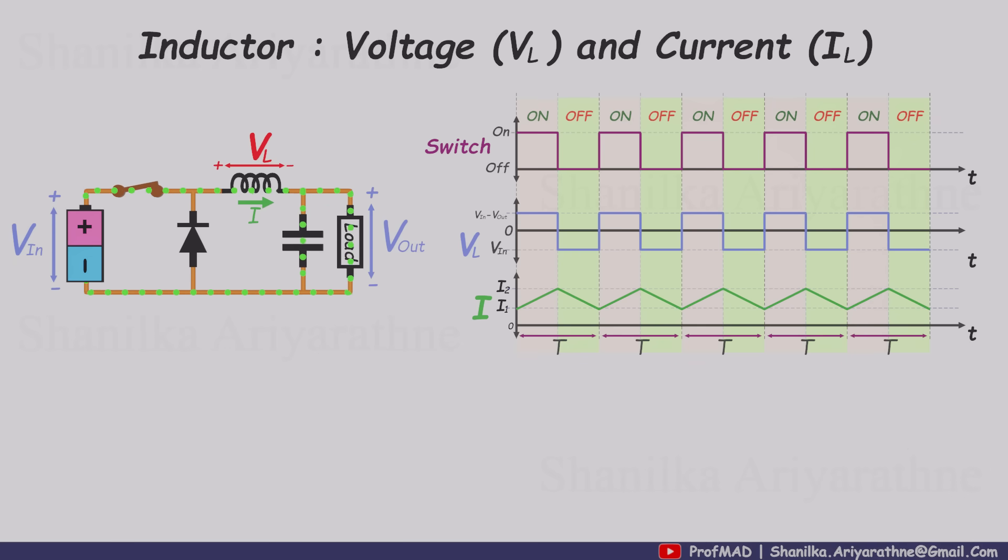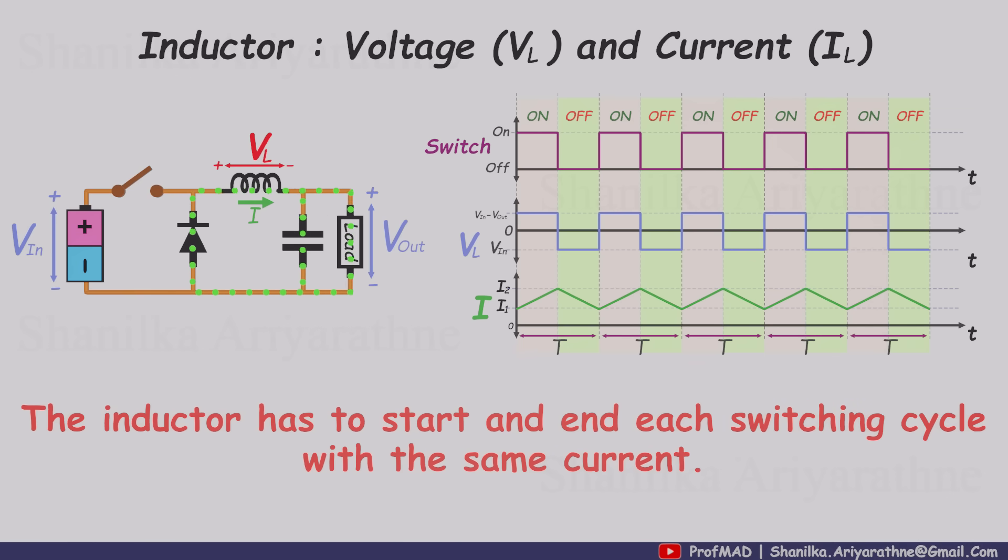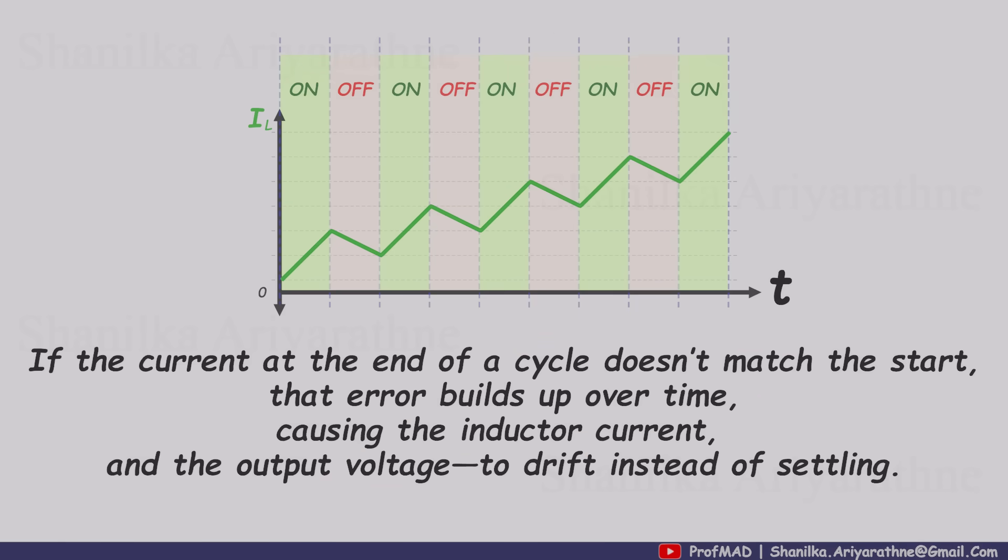Here's the crucial steady state condition. The inductor must start and end each switching cycle with the same current. If it doesn't, if the current at the end of the cycle is different from the current at the beginning, that mismatch builds up over many cycles. The average inductor current slowly drifts up or down, and the output voltage drifts with it instead of settling to a stable value. That's why this condition is absolutely essential.